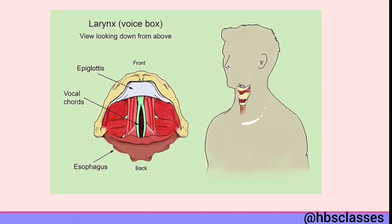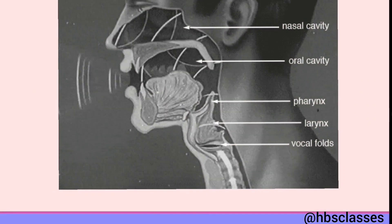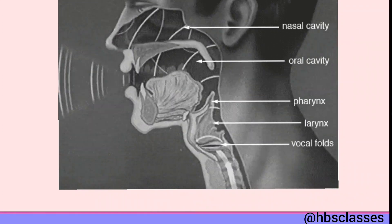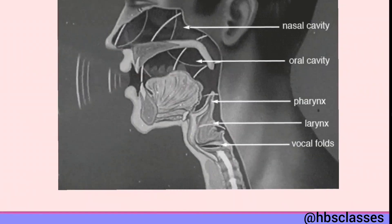The voice box is also called the larynx. It is at the upper end of the windpipe. Two ligaments called vocal cords are stretched across the larynx in such a way that it leaves a narrow gap between them for the passage of air. When the lungs force air through this narrow gap, the vocal cords vibrate, resulting in the production of sound.